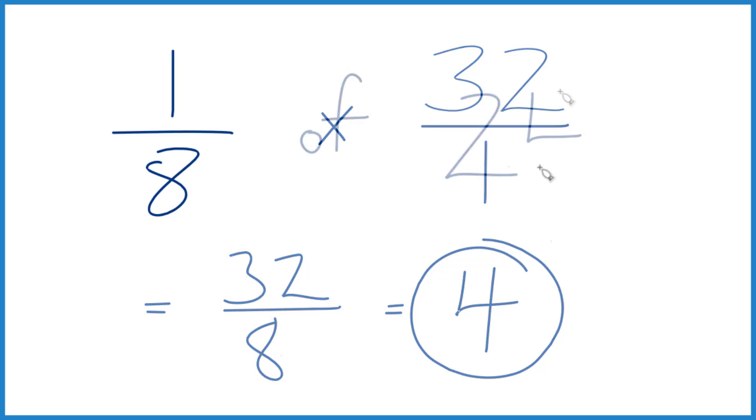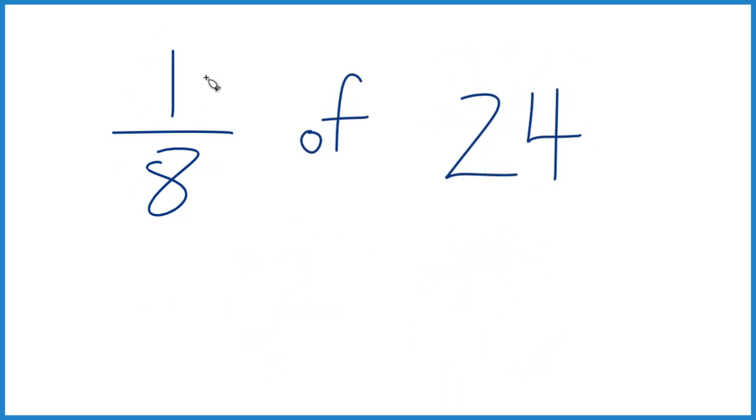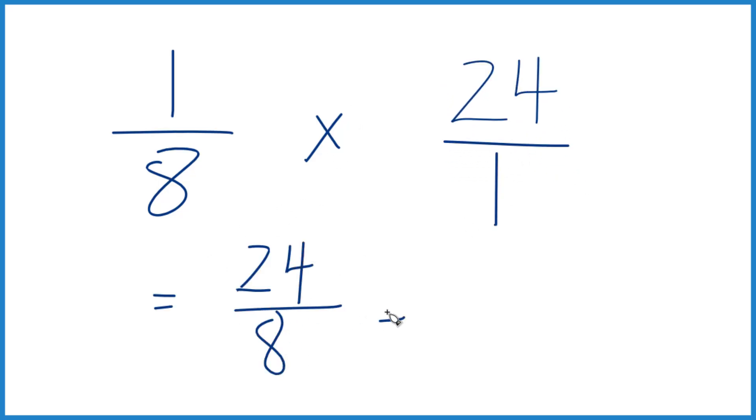Let's try another one. Pause and find one-eighth of the number 24. And 8 goes into 24 three times. 3 times 8 is 24, so one-eighth of the number 24 is 3.